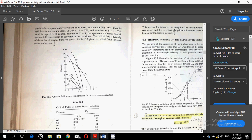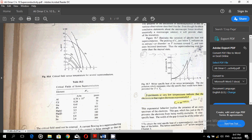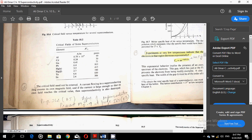So have a look at the figure 10.7 and the table 10.2 which gives us the critical field at 0 degrees Kelvin for various superconductors. The critical field need not be external. Sometimes a current flowing in a superconducting ring creates its own magnetic field, and if the current is large enough so that its own field reaches the critical temperature, then superconductivity is also destroyed.